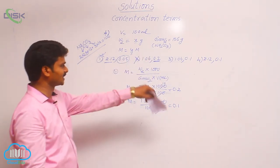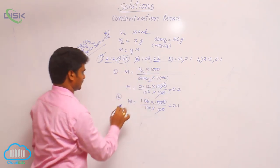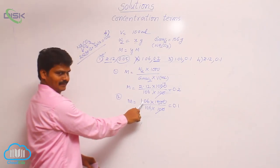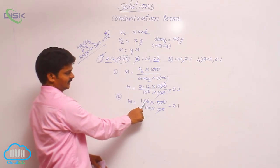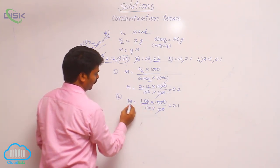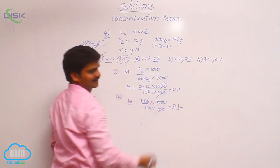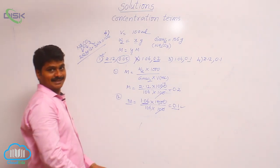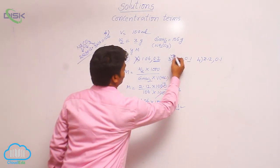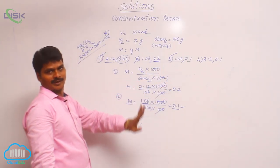Now go to option 3. The weight given is 1.06 grams. If 1.06 is substituted into the formula, the molarity of the solution is 0.1. That means substituting the first value in the formula gives 0.1, which matches the second value given in option 3. Therefore, the third option is the correct answer.